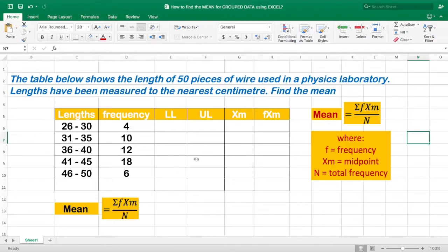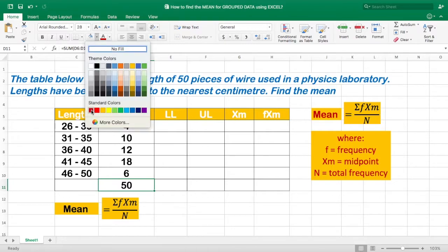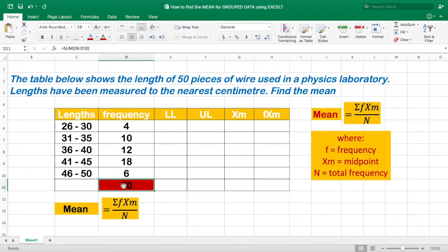And the first thing that we should do is to find the total frequency. That is equal sum, parentheses, click the first frequency, colon, the last frequency, close parentheses, then enter. And we got 50. Let us highlight it red, so that you would know that this is the total frequency.